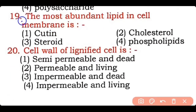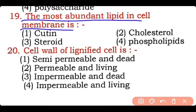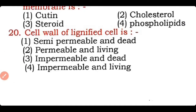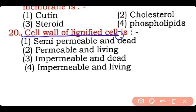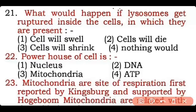Question 19: The most abundant lipid in the cell membrane is — cutin, cholesterol, steroid, or phospholipids? Correct answer is option four — phospholipid is the most abundant lipid in the cell membrane. Question 20: The cell wall of a lignified cell is — semipermeable and dead, permeable and living, or impermeable and dead? Correct answer is option three — the cell wall of a lignified cell is impermeable and non-living.